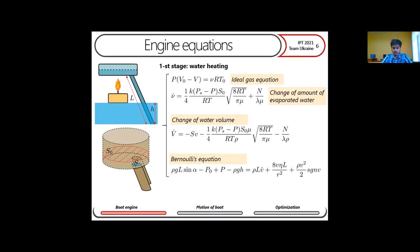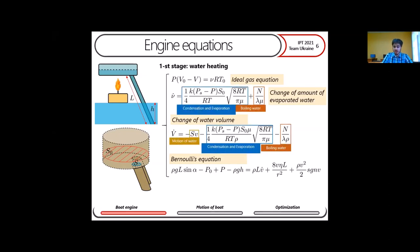To describe this, we consider two stages. The first stage is when we have water and vapor inside the boiler. We write down the ideal gas equation and consider the change of it, taking into account condensation, evaporation, and the increase in amount from boiling. We also consider the change of volume of water inside the boiler — including a term corresponding to volume lost by motion of water inside the tubes and condensation. We then write down Bernoulli's equation, taking into account inertial water and also viscosity.